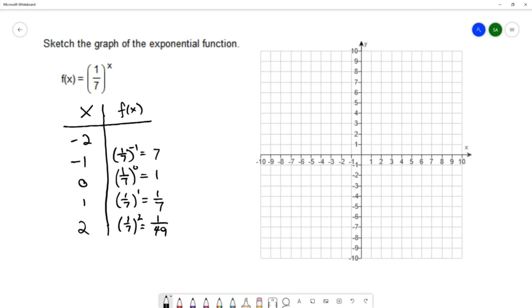We'll do the same thing on the next one. (1/7)^(-2): the negative allows me to do the reciprocal of the base, so that's 7^2 = 49.